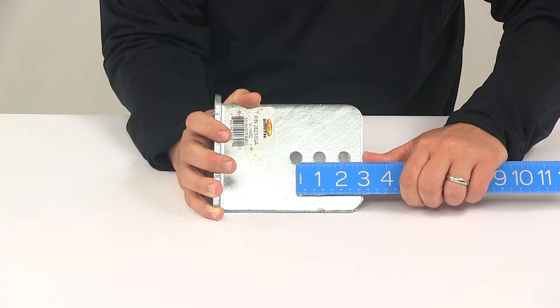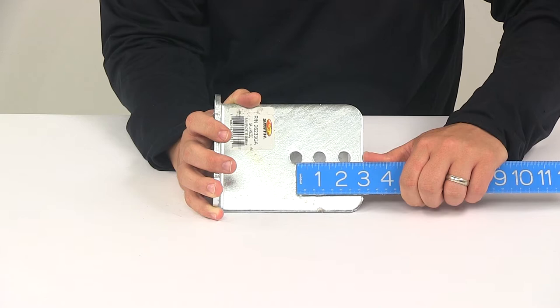The distance on center between the two outer holes is going to be pretty close to two and three sixteenths of an inch. And then the plate thickness is a quarter inch steel.